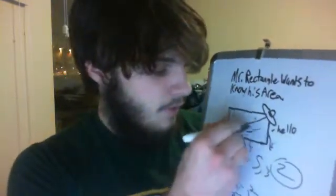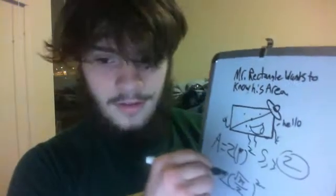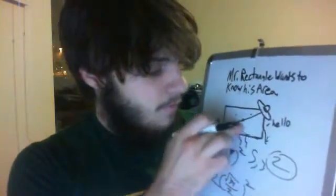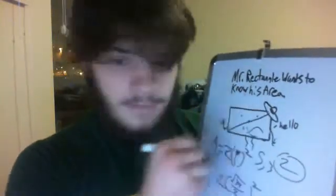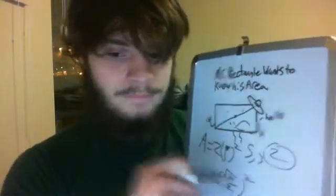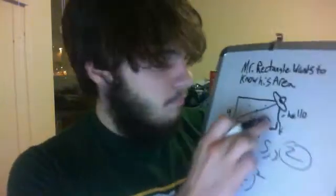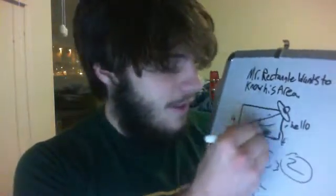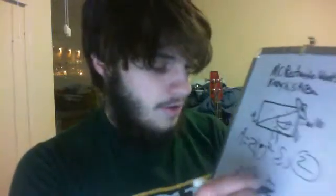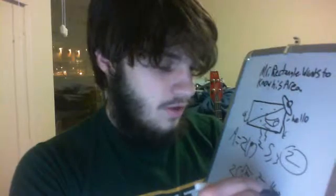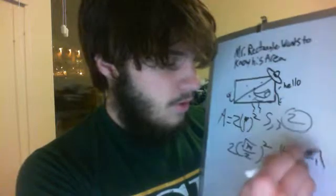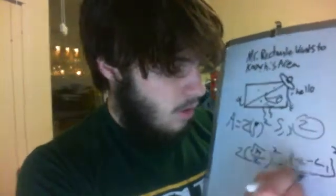Now, he's very happy that we know that. But there's also another problem that makes him kind of sad, which is that this isn't really his area. This is his area if he was a square. But we can make him happy again by using this part of an equation — length 1 minus length 2, squared over 2.